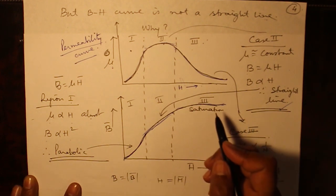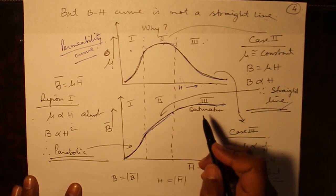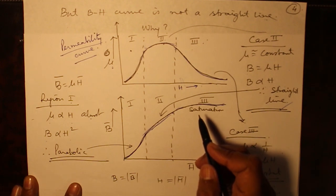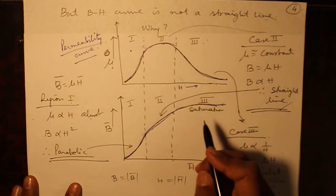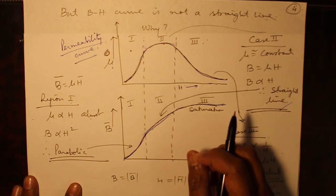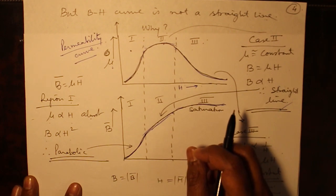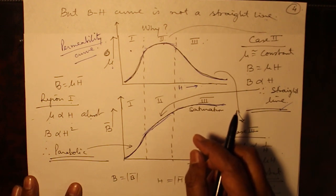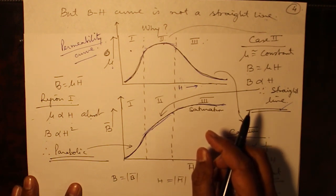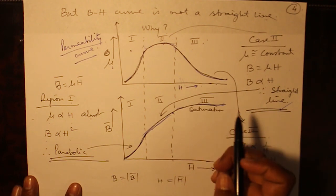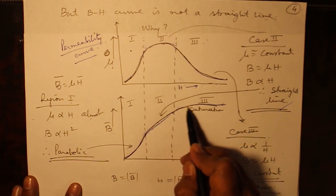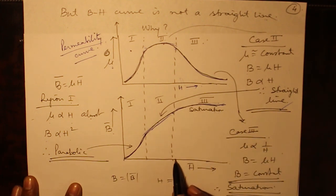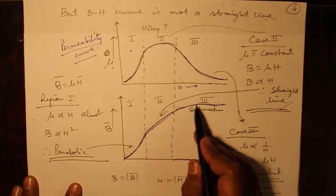From a material point of view, saturation can be explained by the basic concept that when all the magnetic dipoles have been arranged in the direction of the magnetic field, the material becomes fully magnetized. It cannot have a magnetic flux greater than that, and hence the value of B becomes constant. Howsoever more current flows through it, the value of B will remain constant.